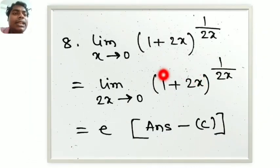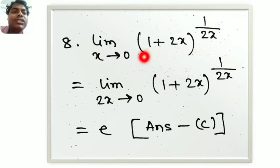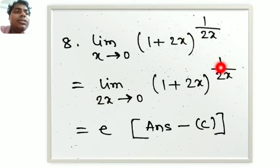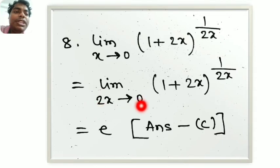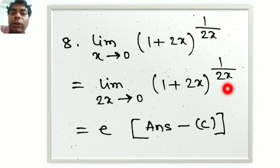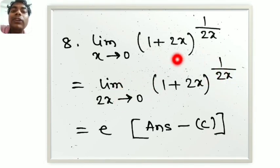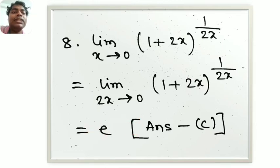Next: limit x tends to 0 of (1 plus 2x) to the power 1 by 2x. When x tends to 0, 2x tends to 0. Using the standard formula, limit 2x tends to 0 of (1 plus 2x) to the power 1 by 2x equals e. So the answer is e, option e.